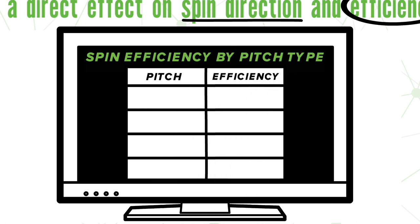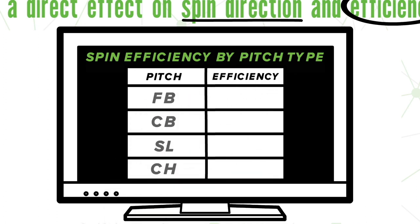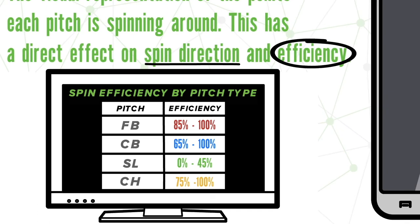For fastballs, curveballs, and changeups, you want a higher spin efficiency in order to maximize the movement of these pitches, but on sliders, you will see a significantly lower spin efficiency due to the way that that pitch is released. I'll see you in the next one.